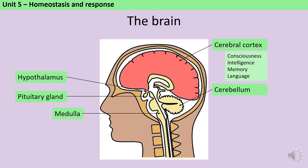The cerebellum is a little bit more mundane. It coordinates the muscles necessary for all voluntary movement, so things like walking or throwing a ball. The medulla is responsible for involuntary movements, so things like your heart beating and your lungs breathing.